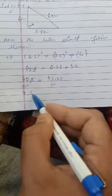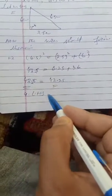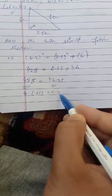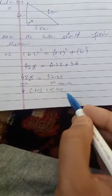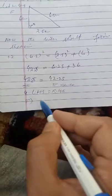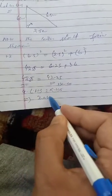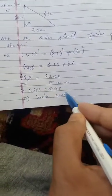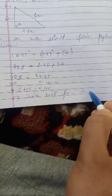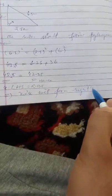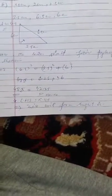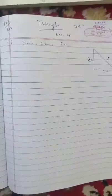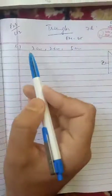Left hand side equals 42.25, right hand side equals 42.25. LHS is equal to RHS, which implies these can form a right triangle. Yes, these make a right triangle.